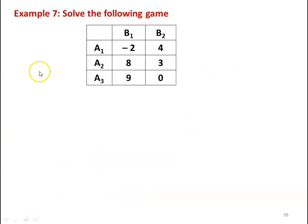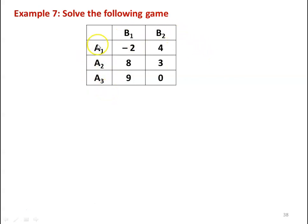We take another example: solve the following game by the graphical method. Player A has three strategies A1, A2, A3 and player B has two strategies B1 and B2. The payoff matrix is: A1: −2, 4; A2: 8, 3; A3: 9, 0.